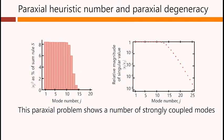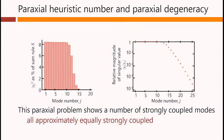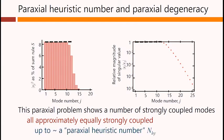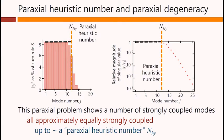This paraxial problem, then, does show a number of strongly coupled modes that are all approximately equally strongly coupled, with this coupling strength here of just over 8%, and up to what we could call a paraxial heuristic number, NHY here. It's about 12 in this case.